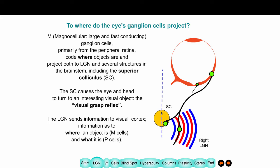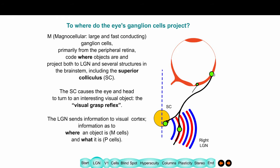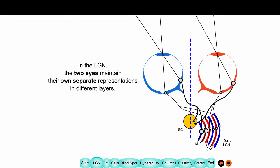The superior colliculus is involved in what's called the visual grasp reflex. So when someone walks in the door and I notice it, I turn my head and eyes toward that person — then I see that person with my fovea. The peripheral signal tells me where something interesting is, and the foveal signal helps me determine what that object is, who that person is. We'll continue discussing those two pathways in the next lecture and many to follow.